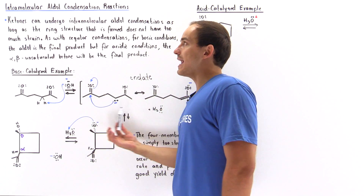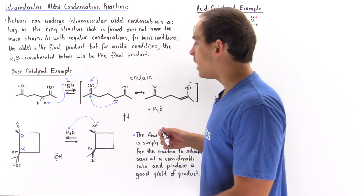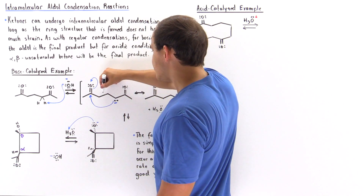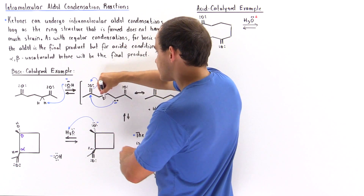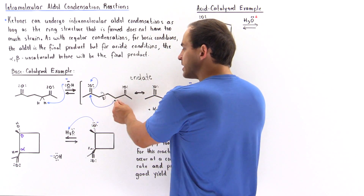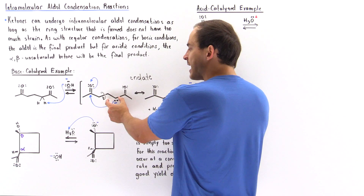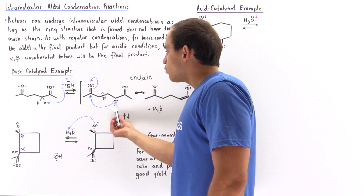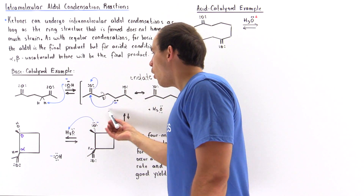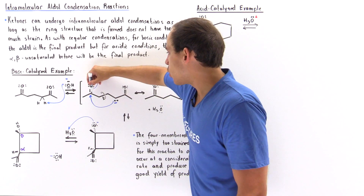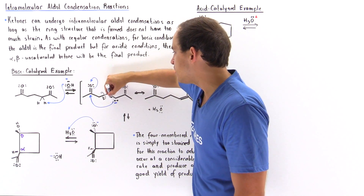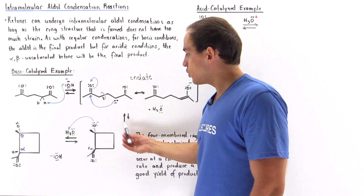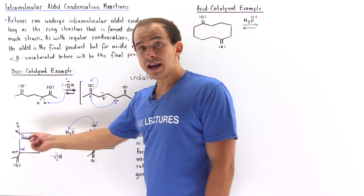What happens is there is an intramolecular aldol condensation reaction. When this bond rotates, this carbon gets close to the carbon containing the lone pair of electrons. As a result of that rotation, the reaction can take place and we can form a four-membered ring. This product, or the intermediate for step two, is shown here.